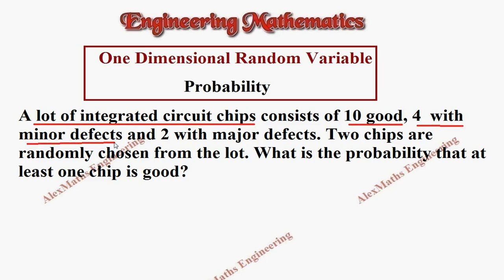and 2 with major defects. Let's write this category. So good, the number is 10, and minor defects the number is 4, and major defects the number is 2, and totally we have 10 plus 4 plus 2